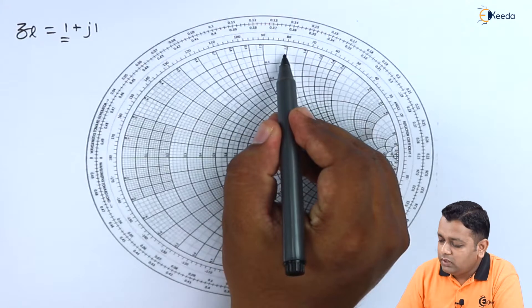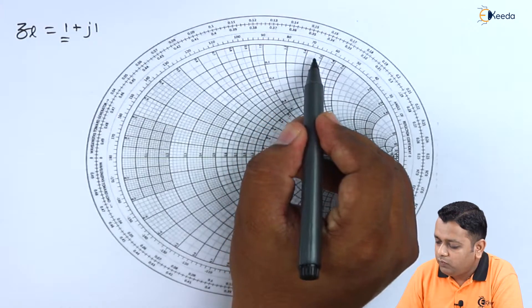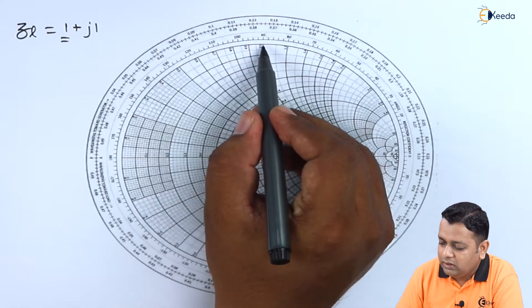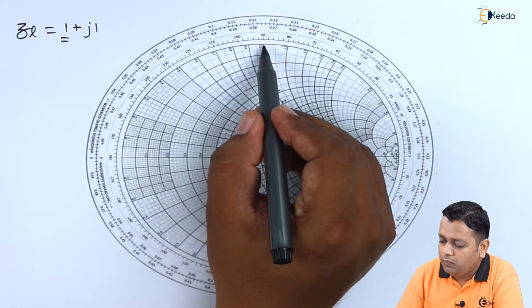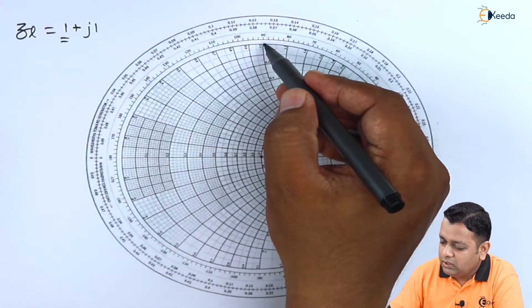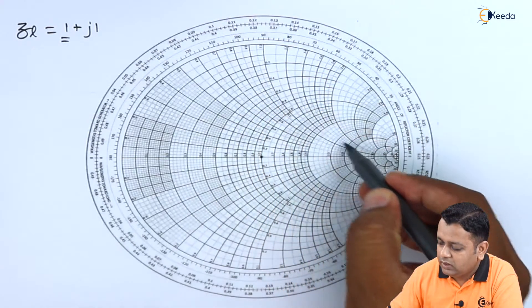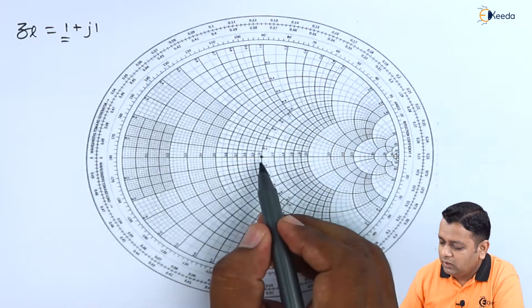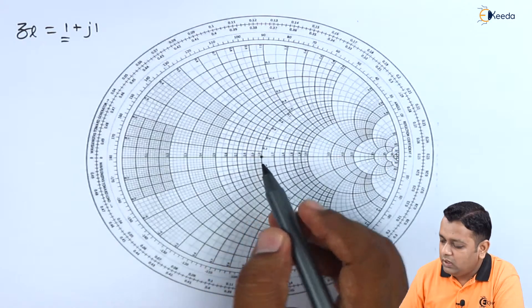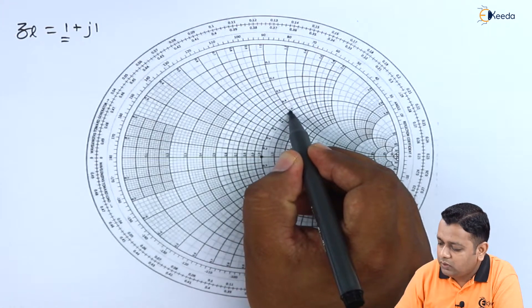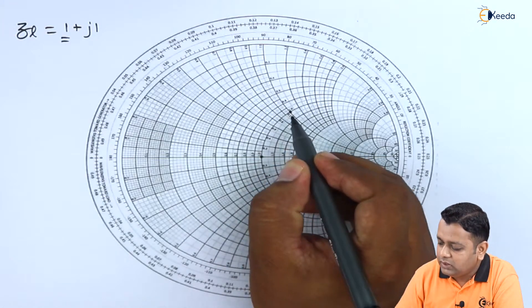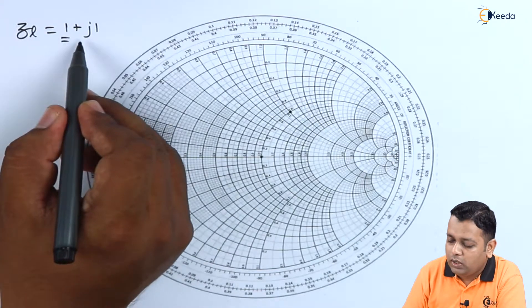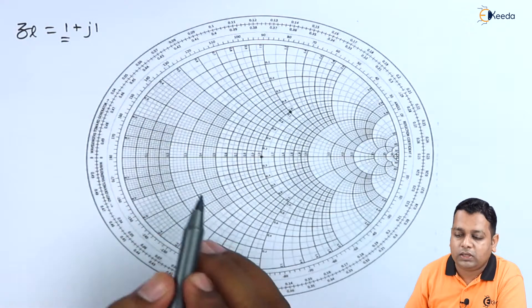Extending further, we have 1.2, 1.4, 1.6, 1.8, 2.0. The line that marks to the top is 1.0. The intersection of the constant X circle for X equals 1 and the constant R circle for R equals 1 gives this particular point. We have now marked the normalized load impedance 1 plus J1 onto the Smith chart — the first step is completed.